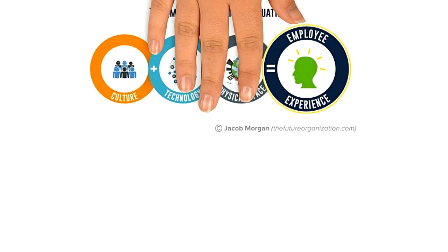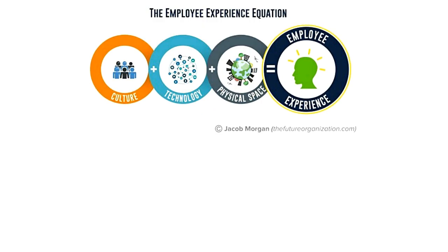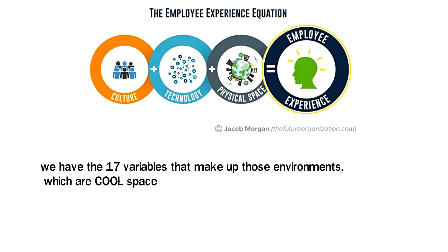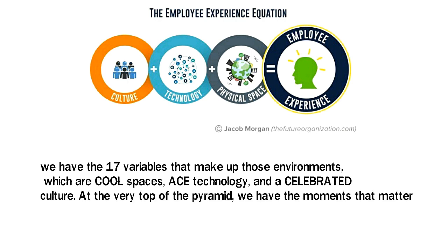On top of that, we have the three employee experience environments, which are culture, technology, and the physical environment. Then we have the 17 variables that make up those environments, which are cool spaces, ACE technology, and a celebrated culture. At the very top of the pyramid, we have the moments that matter.